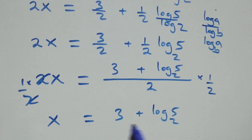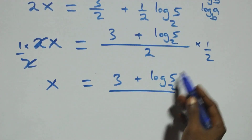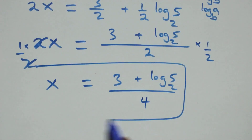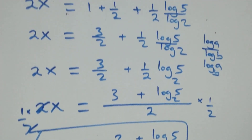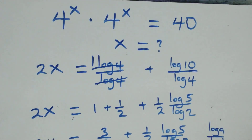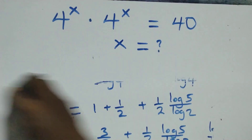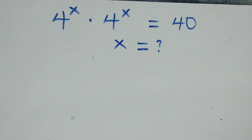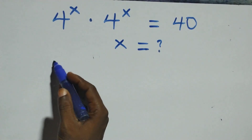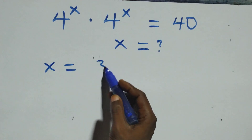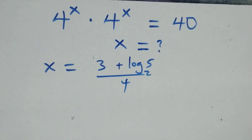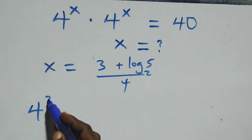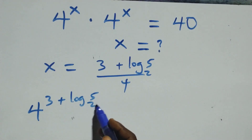Dividing both sides by 2, we get x equals (3 plus log base 2 of 5) all over 4. That is the value of x. Let's check if this satisfies the given problem. We substitute the value x equals (3 plus log base 2 of 5) over 4 back into the original equation.